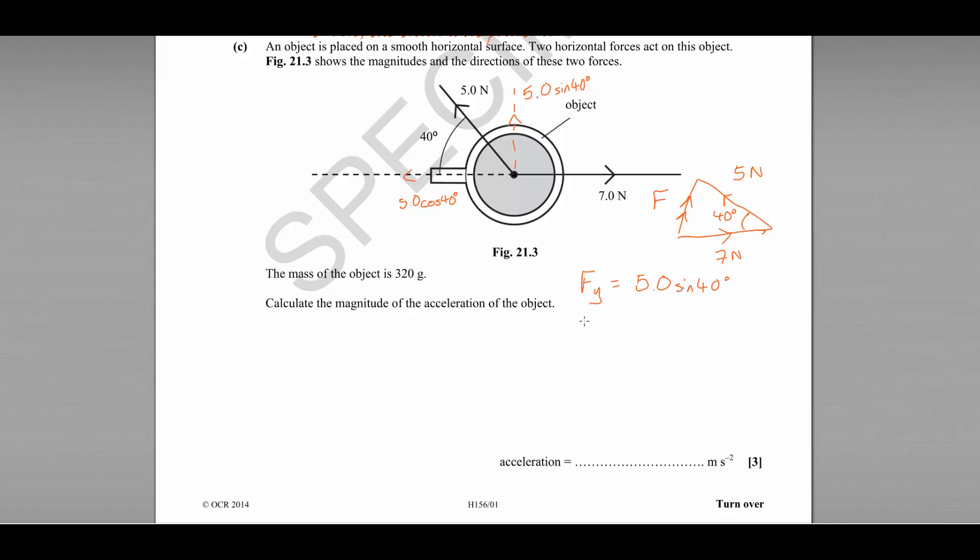And if we resolve horizontally, we will find that the resultant force in the x direction is equal to the difference between 7 newtons and 5.0 cos 40 newtons, which comes out as 3.17 newtons.